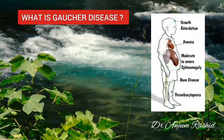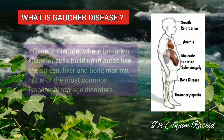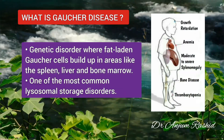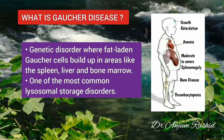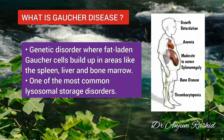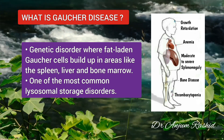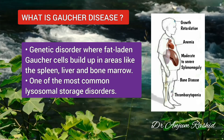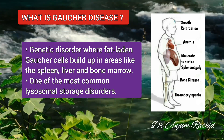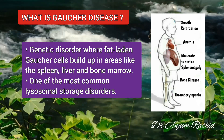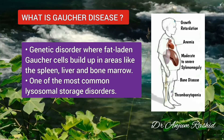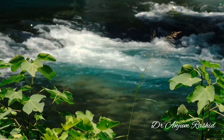First, what is Gaucher disease? It is a genetic disorder where fat-laden Gaucher cells build up in areas like the spleen, liver and bone marrow. It is one of the most common lysosomal storage disorders.